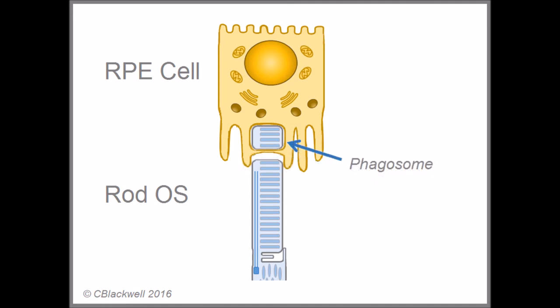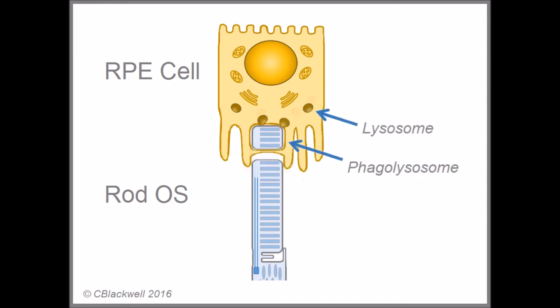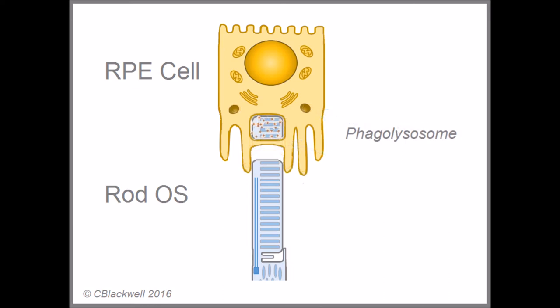Once the RPE cell has engulfed a chunk of outer segment, it must then digest the proteins and lipids contained in that piece. Also remember that the RPE cells are post-mitotic, meaning these cells do not divide anymore. No replacements are coming. These are the cells you have for your lifetime. In other words, the RPE cells are committed to digesting a lifetime of cellular material. They must be very efficient at this so as to minimize buildup of waste products.